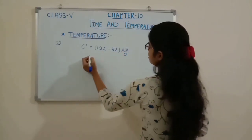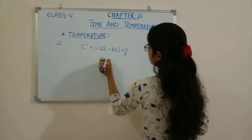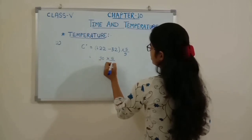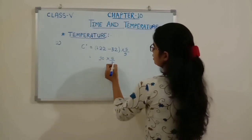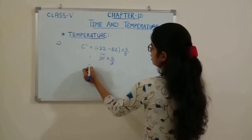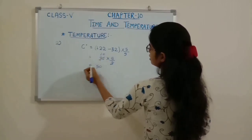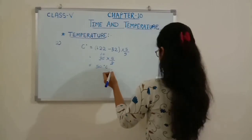122 minus 32 equals 90. Then 90 × 5/9: 9 goes into 90 ten times, and 10 × 5 equals 50. So the answer is 50 degrees Celsius.